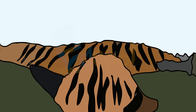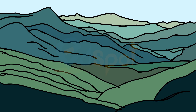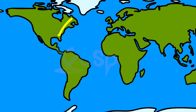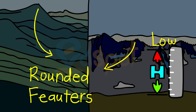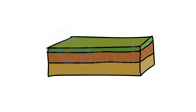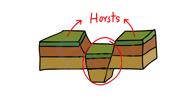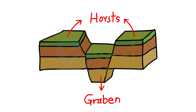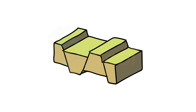The Aravalli range has considerably worn down due to the process of erosion. The Appalachians in North America and the Ural mountains in Russia have rounded features and low elevation — they are very old fold mountains. Block mountains are created when large areas are broken and displaced vertically. The uplifted blocks are termed as horsts and the lower blocks are called grabens. The Rhine Valley and the Vosges mountain in Europe are examples of such mountain systems.